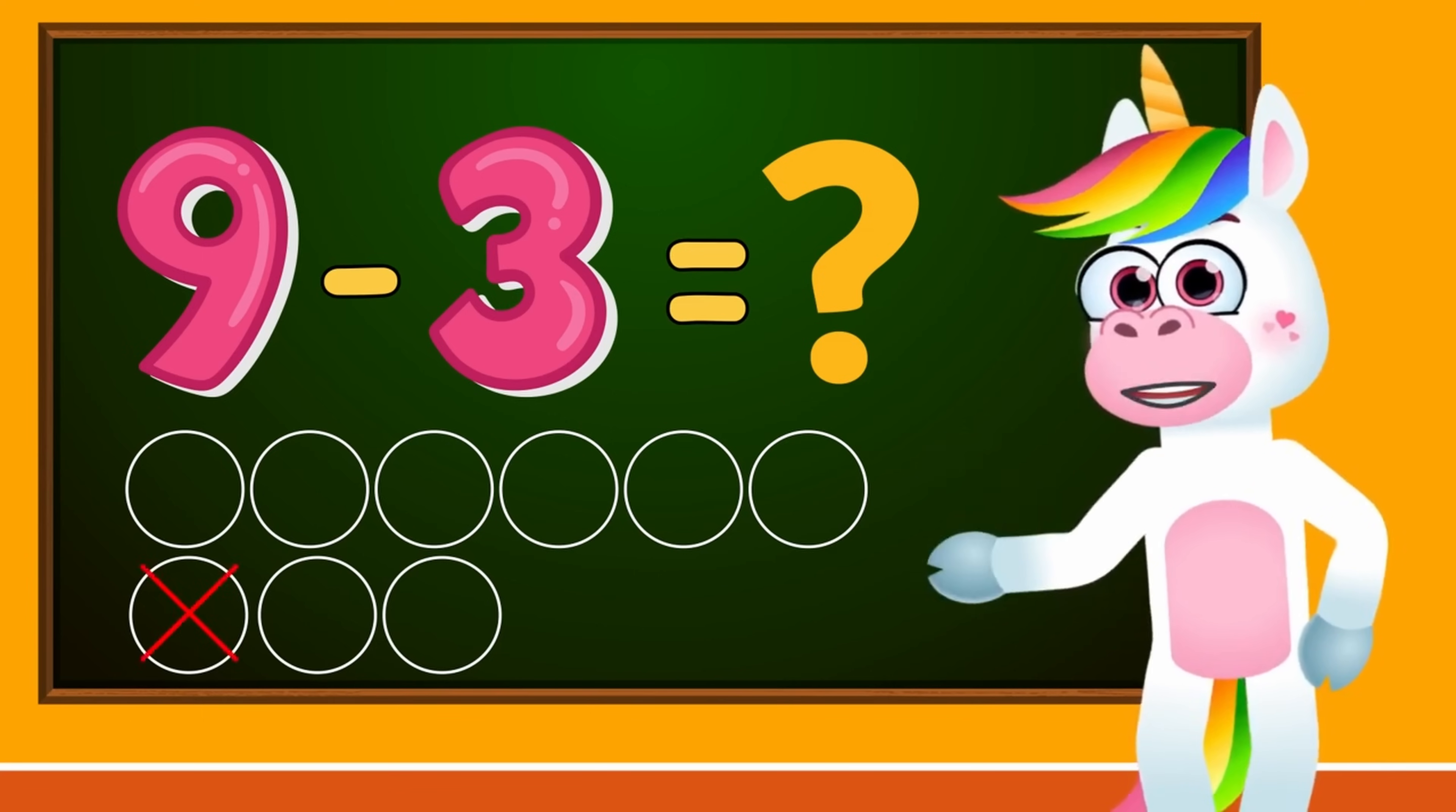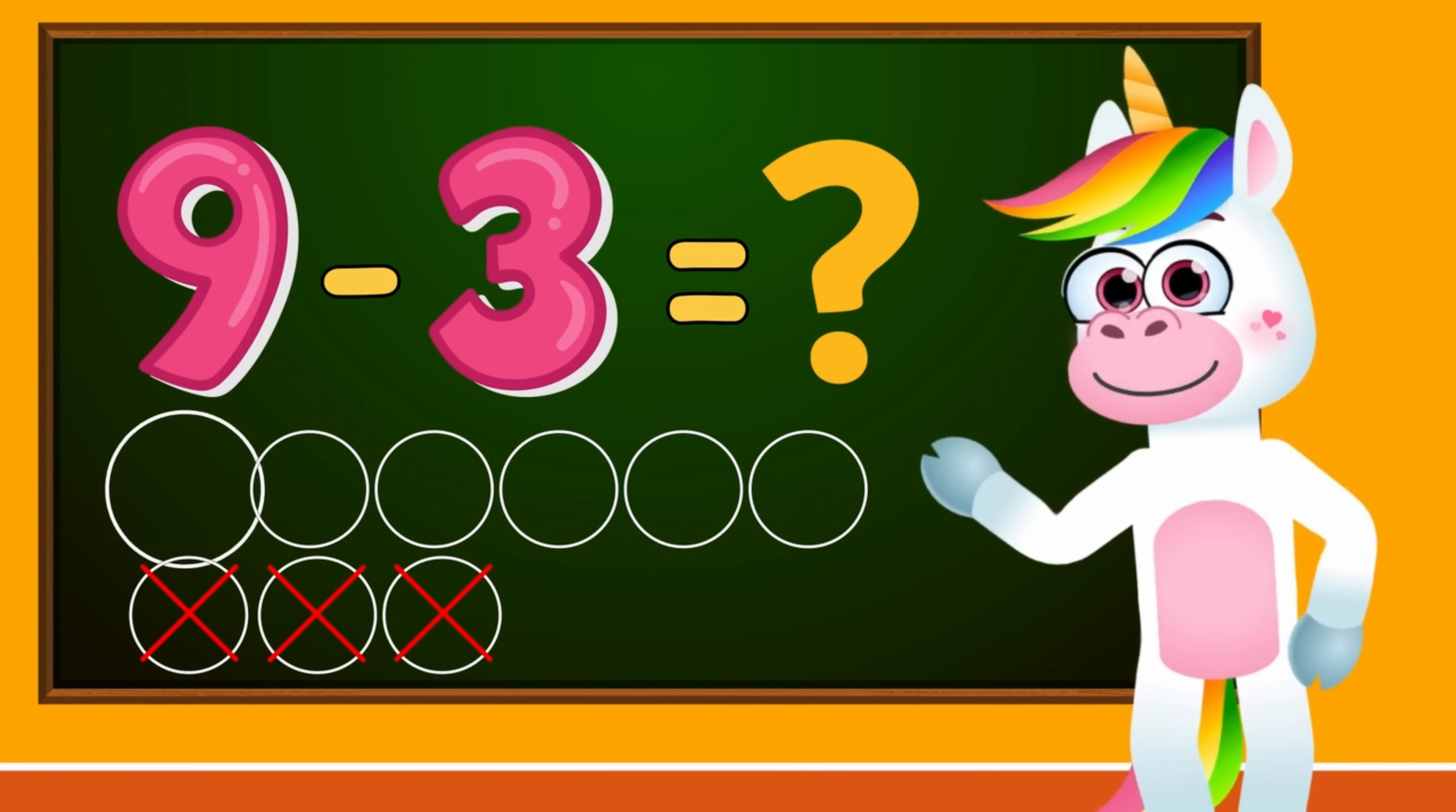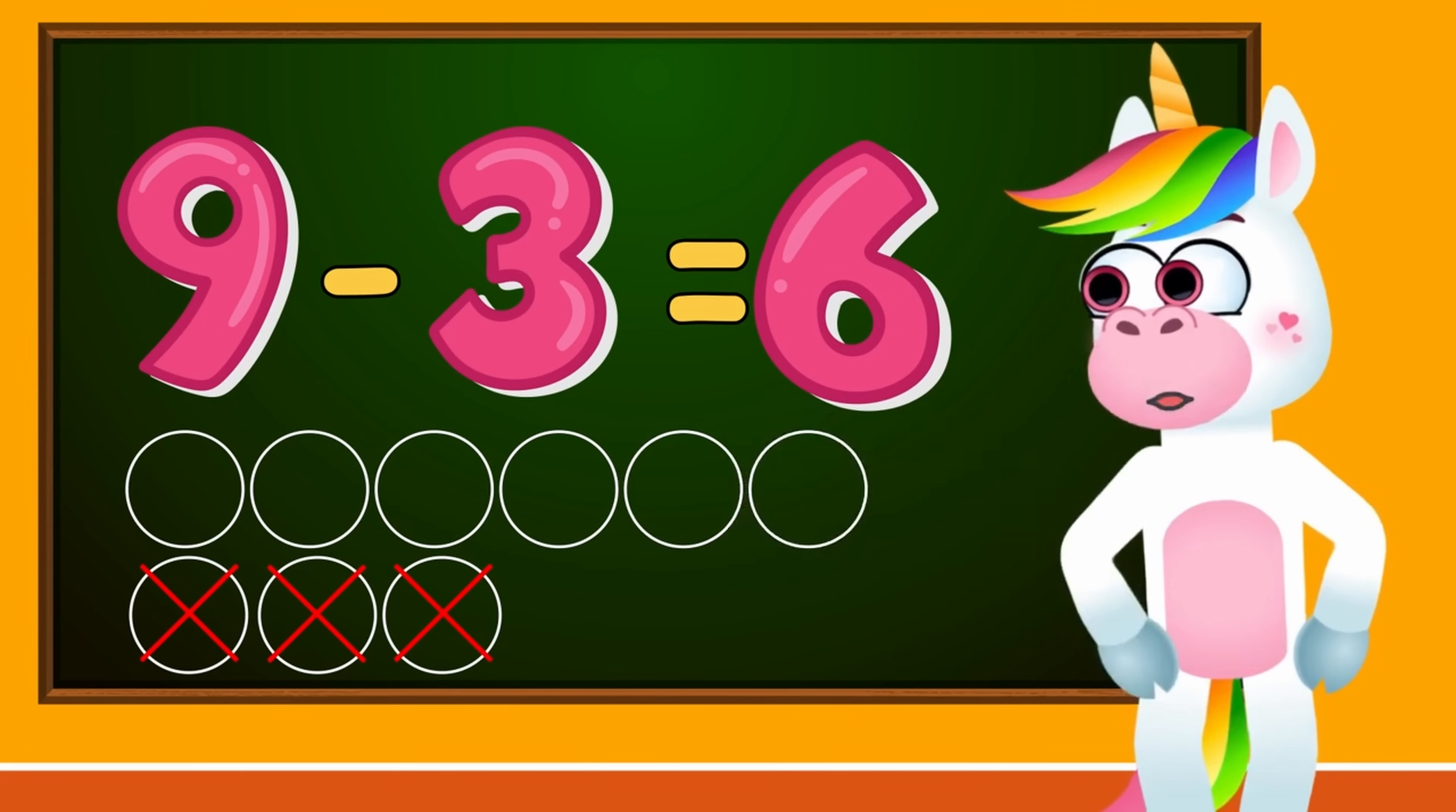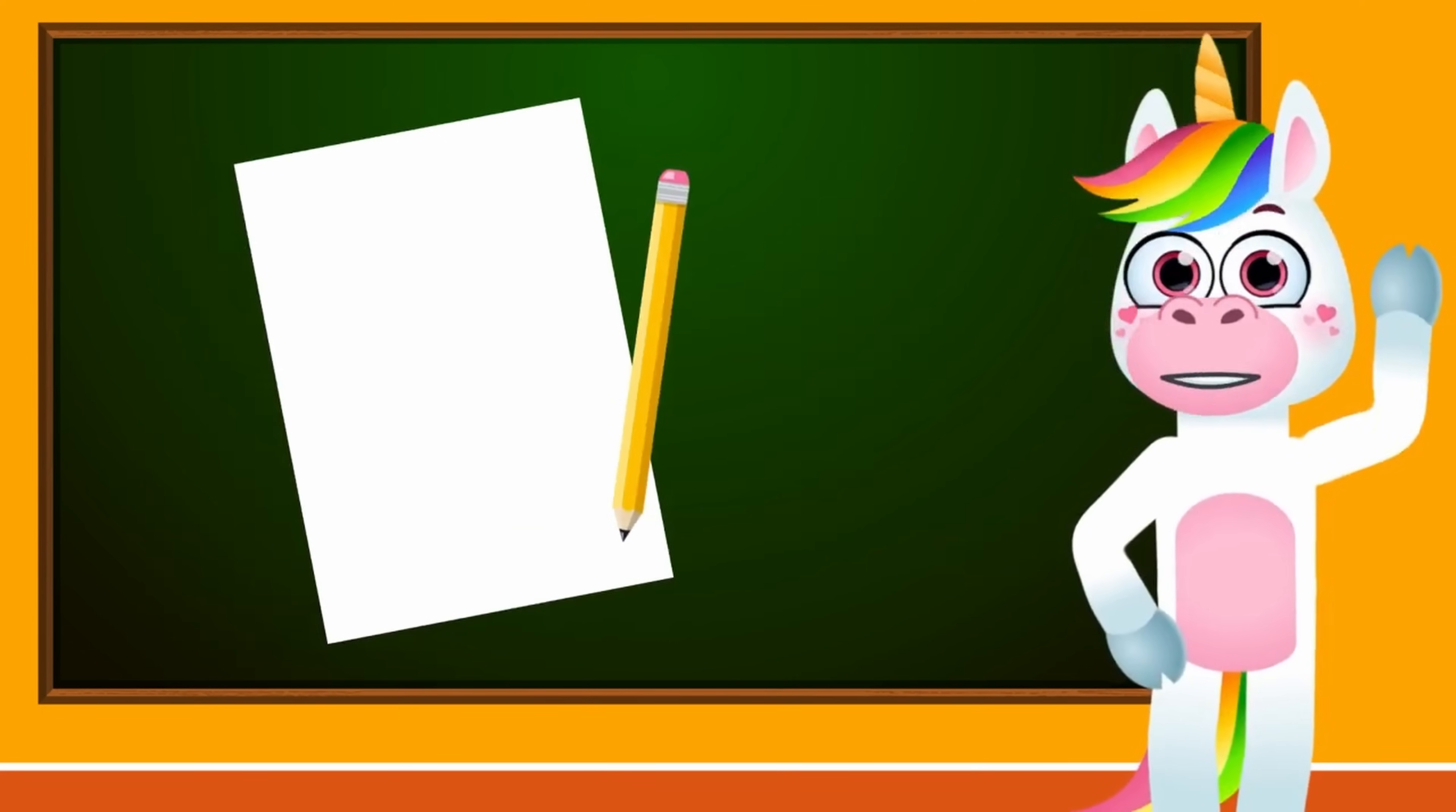1, 2, 3. The number of circles we have left is the correct result. Let's count them. 1, 2, 3, 4, 5, 6. So kids, 9 minus 3 equals 6. Very simple, isn't it? You can also, kids, take a piece of paper and a pencil and do the operations with me.